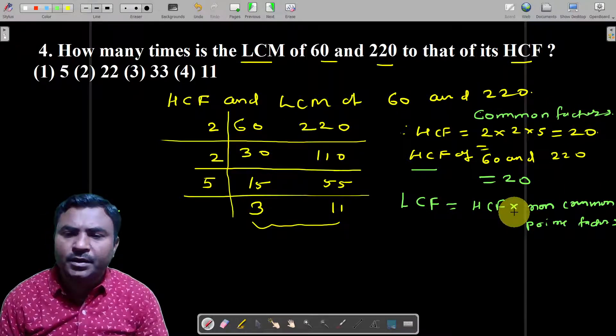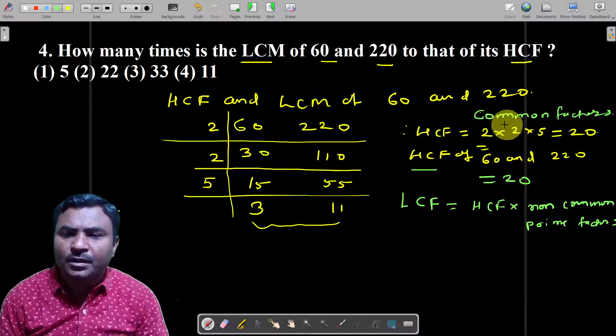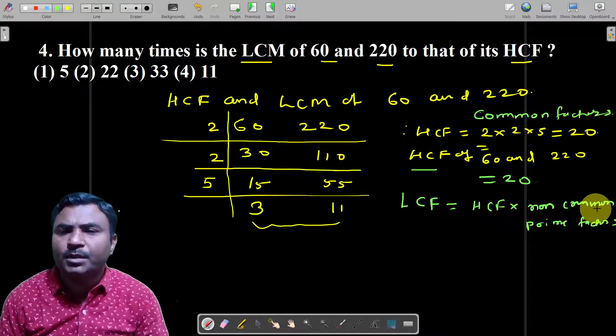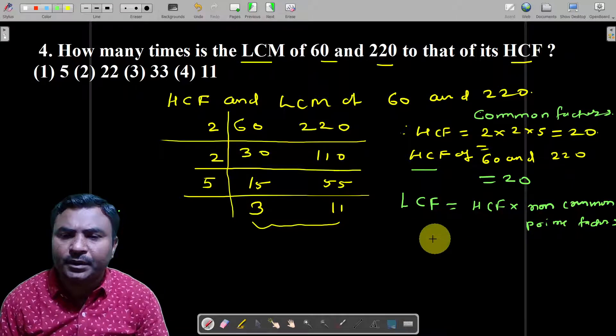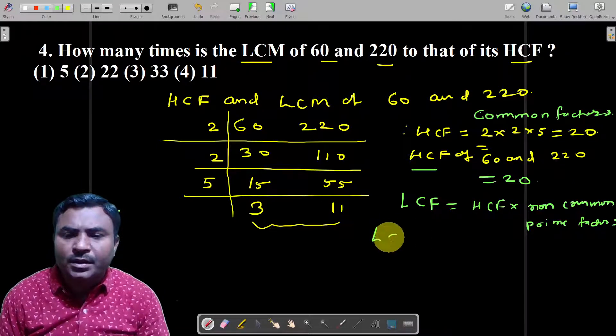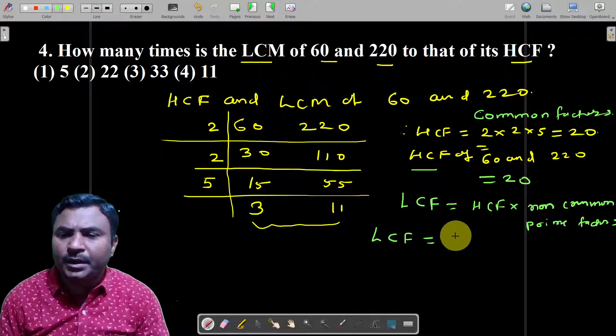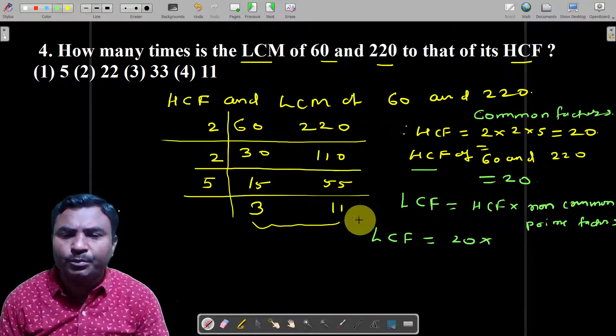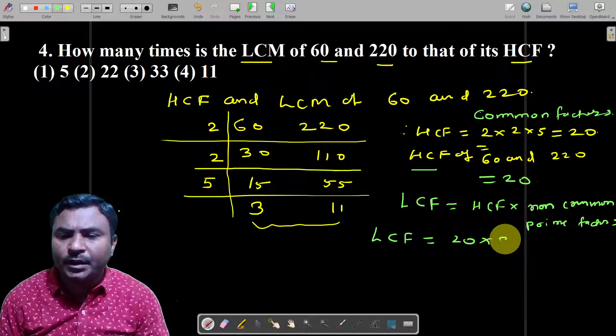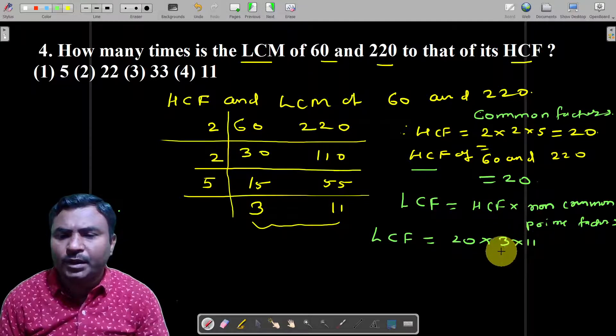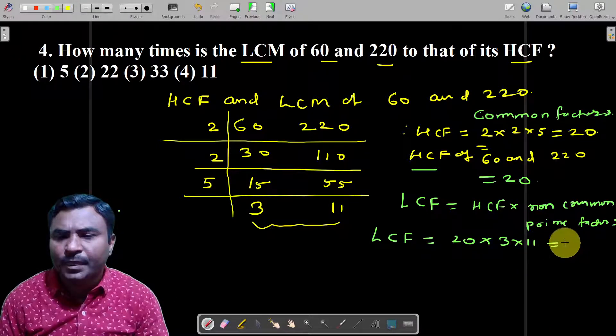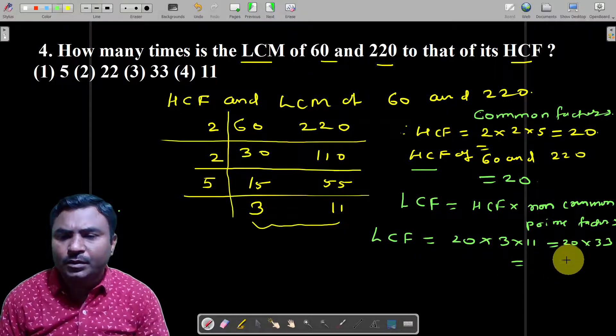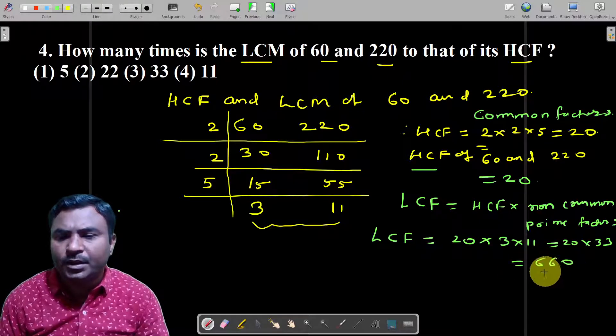LCM equals HCF, which is 20, times the non-common prime factors 3 into 11. So LCM equals 20 times 3 times 11, which equals 660.